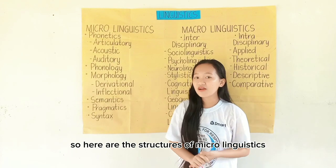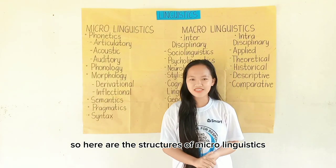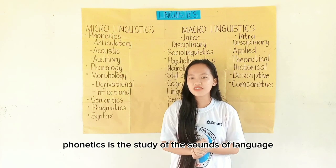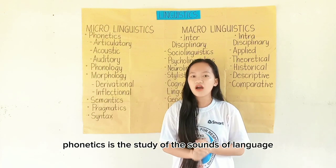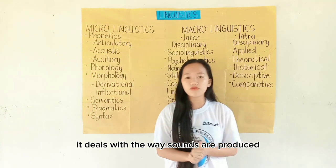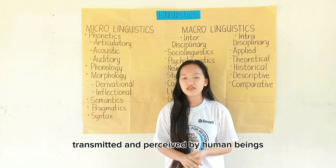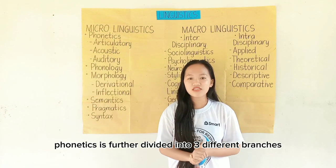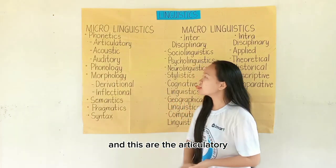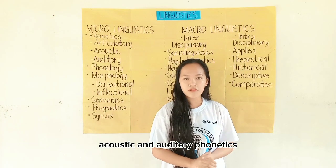Here are the structures of micro linguistics. First, phonetics. What is phonetics? Phonetics is the study of the sounds of language. It deals with the way sounds are produced, transmitted, and perceived by human beings. Phonetics is further divided into three different branches: articulatory, acoustic, and auditory phonetics.